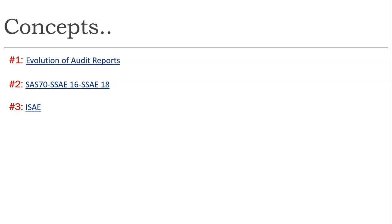Now we come to the topic of the day — reporting and how auditing has evolved over time. I covered this briefly in the last lecture on cloud risk. This topic covers how the audit has evolved: what is SAS 70, SSAE 16, and SSAE 18, and also the ISAE report. These three are very important for exam purposes — you can expect at least two to three questions from this lecture.